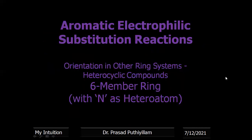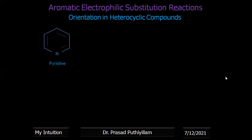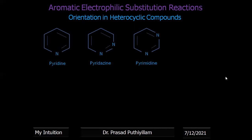Now orientation in other ring systems like six-membered ring systems. Taking only those with nitrogen as the heteroatom: quinoline, pyridine, pyrimidine, and pyrazine. These are aromatic six-membered heterocyclic compounds with nitrogen as the heteroatom. From these I am going to discuss more about pyridine, not going into detail about pyrimidine or pyrazine.